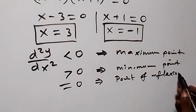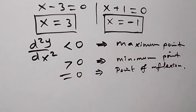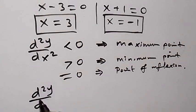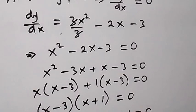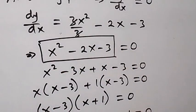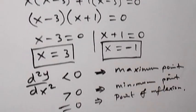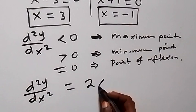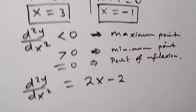Now, d²y/dx² is obtained by differentiating the first derivative again. Differentiating x² minus 2x minus 3 gives us the second-order derivative: 2x minus 2.